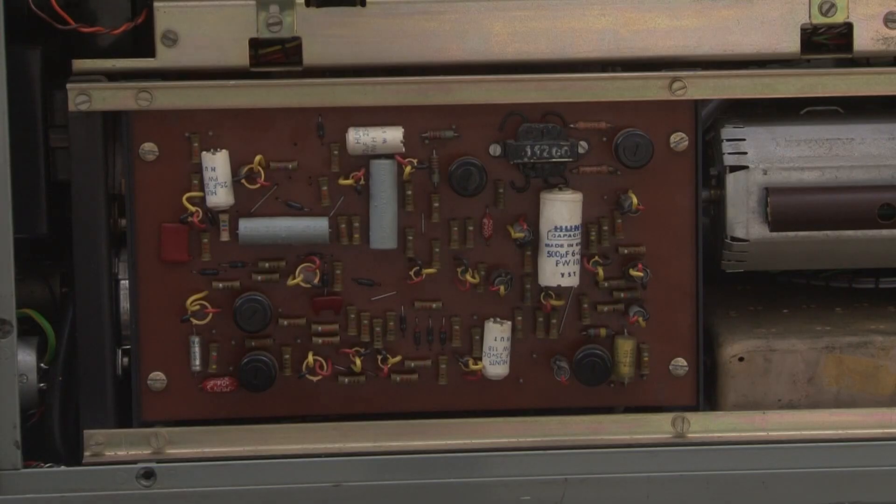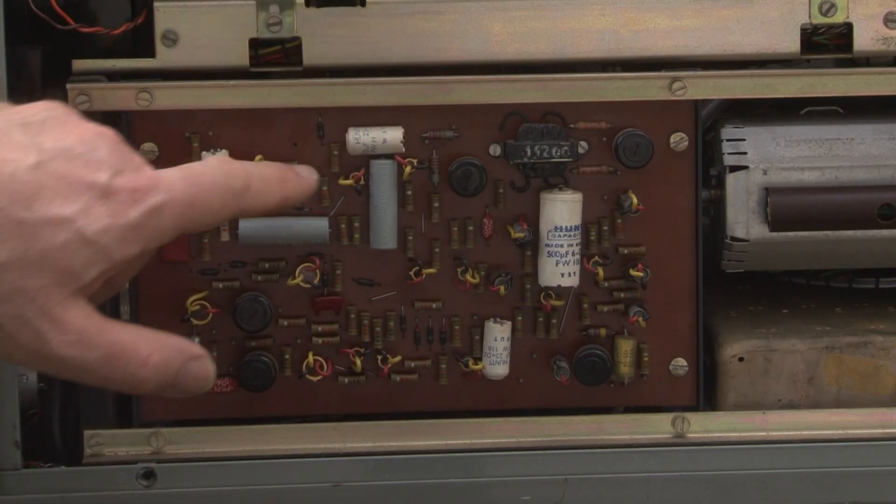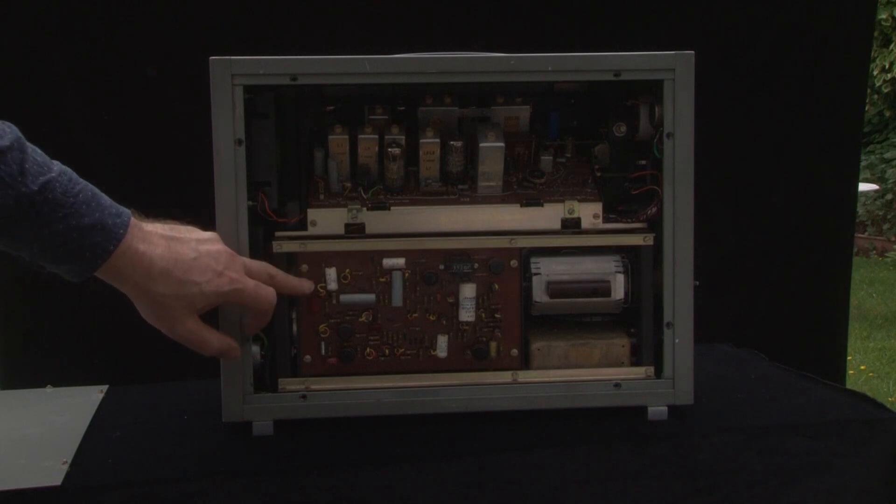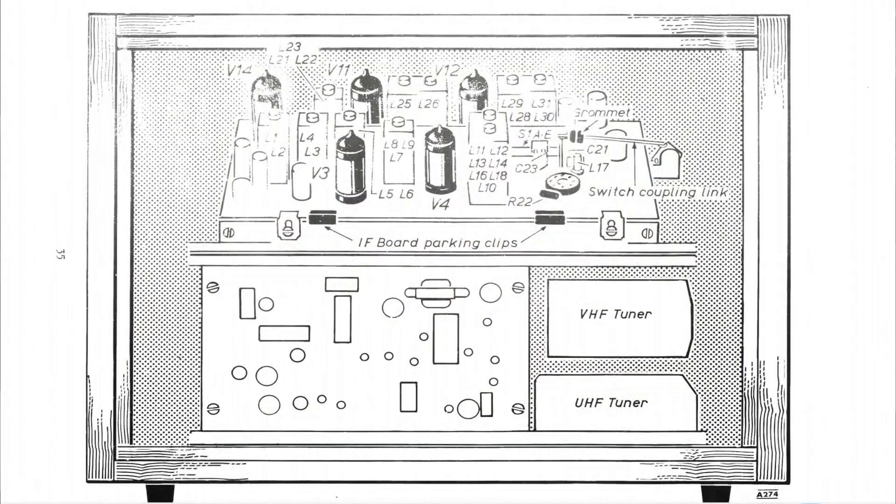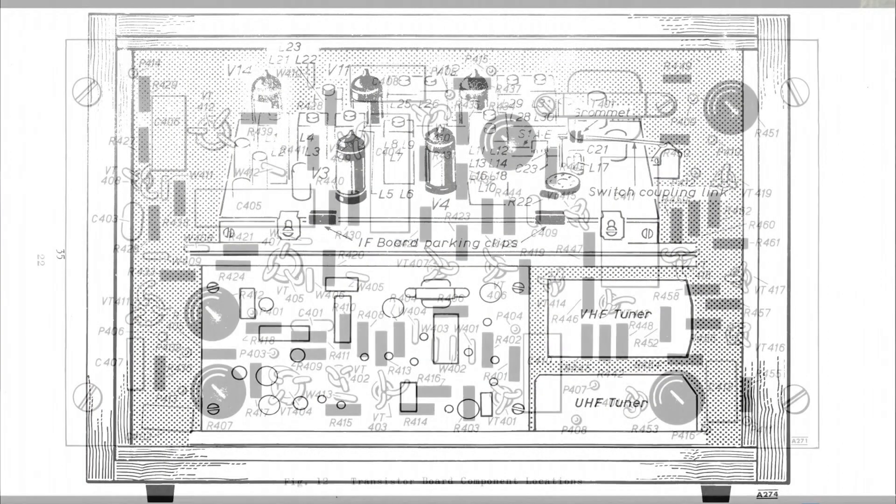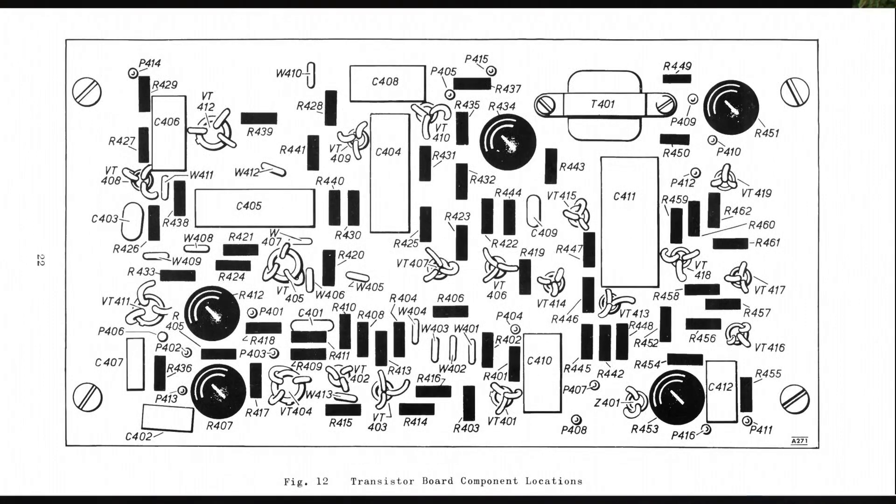But down on the transistor board, there's absolutely nothing. No clue at all. And you have to refer to the service manual and look at the overlays to actually work out what component is what. And that's even before you try to get this board out to remove potentially 40 components.